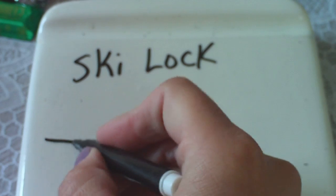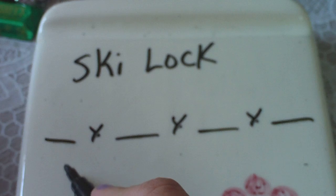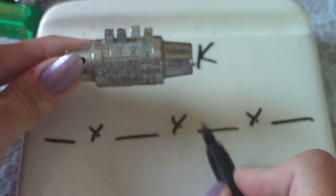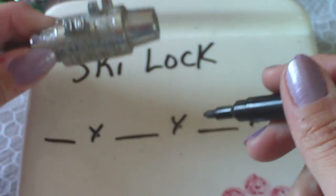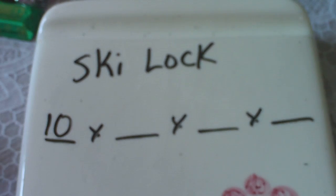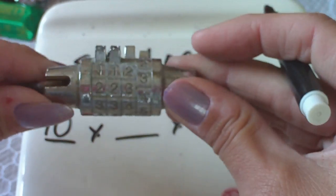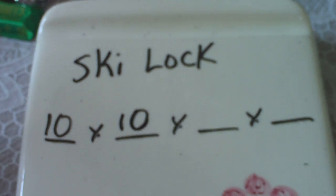So we're going to do something times something times something times something, because this represents the first number on the lock, the second number, and so on. Now if you ask yourself how many digits that is — 1, 2, 3 all the way through 0 — that's 10 digits. In order to figure out the remaining digits, you have to ask yourself: can digits be repeated? And with a lock like this, the answer is yes. So that means we still have 10 numbers available for the second digit, and likewise for the third and for the fourth.